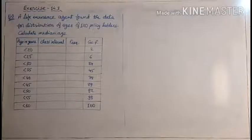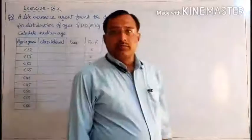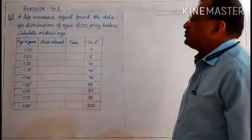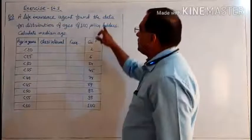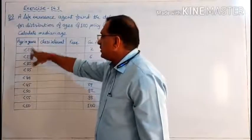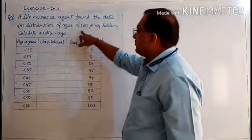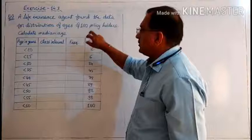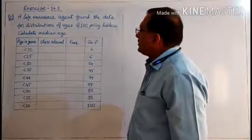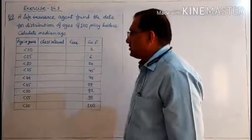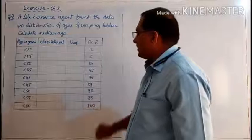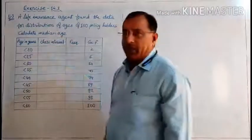In exercise 14.3, Statistics, question number 3. A life insurance agent found the data for distribution of ages. Here distribution of ages in years is given for 100 policyholders. The cumulative frequency is given and we have to calculate the median age.